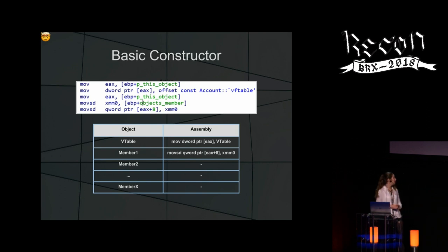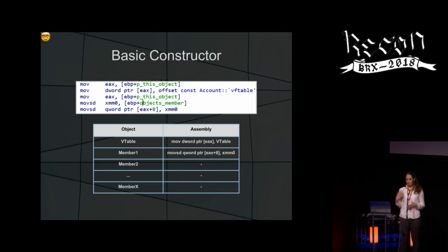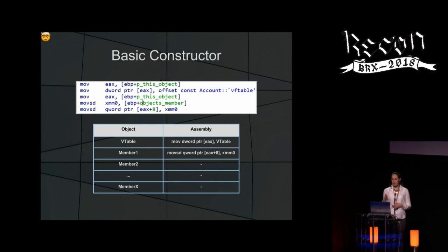This one is a default constructor. The object starts with four bytes of the Vtable. After the Vtable, you have all the members of the object. You can see in the assembly the part that sets the Vtable into the first bytes of the object, and you can also see the member — in this case a float member — being set to the second four bytes.